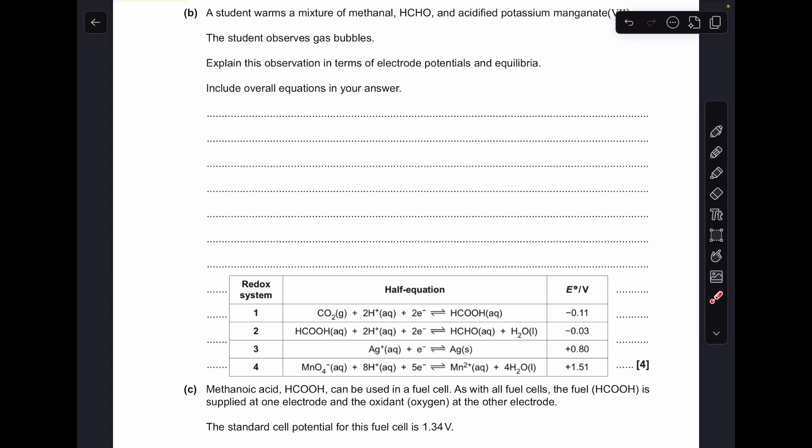Part B, we've got to explain why when the student warms this mixture of methanol with acidified potassium manganate 7, they observe gas bubbles. So the first two redox systems we're interested in are 2 and 4.